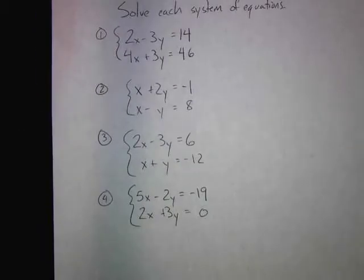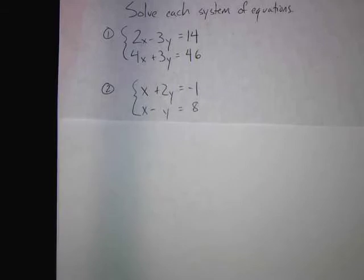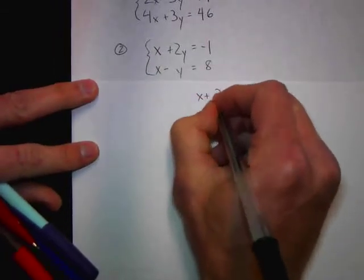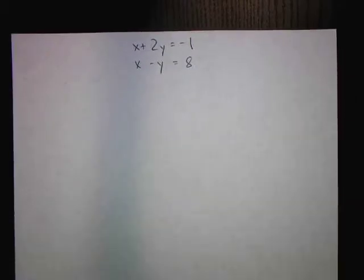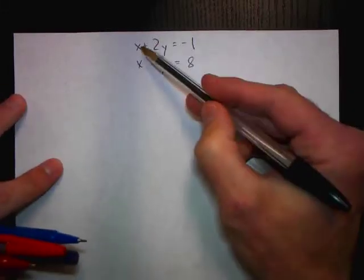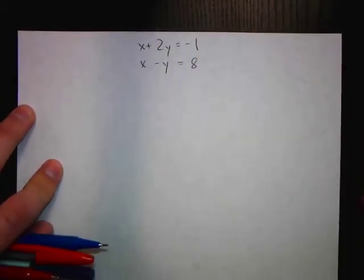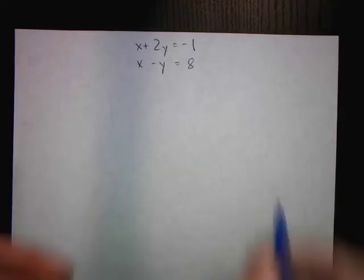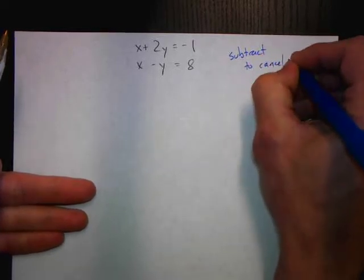Now we have the second system. We have x plus 2y equals negative 1, and x minus y equals 8. We're going to have an elimination party. Can we cancel any of these two variables? We have an x here and an x here. If we subtracted these two things, the x's would disappear. So what we can do here is subtract to cancel x.